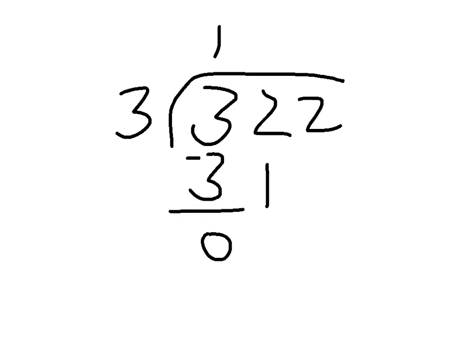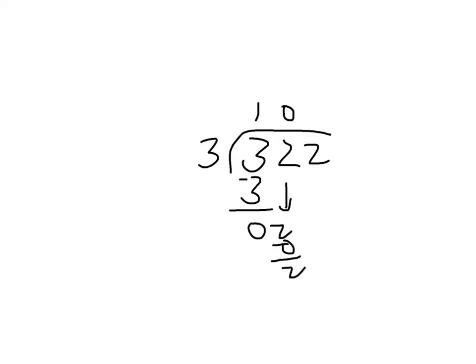One, two, three. Minus equals zero. Bring down the two. Doesn't go in, zero. Minus equals two. Seven is twenty-one, minus equals one. There's nothing to bring down from here. There's no more digits in this number. This number doesn't go into that number. So what do you do?